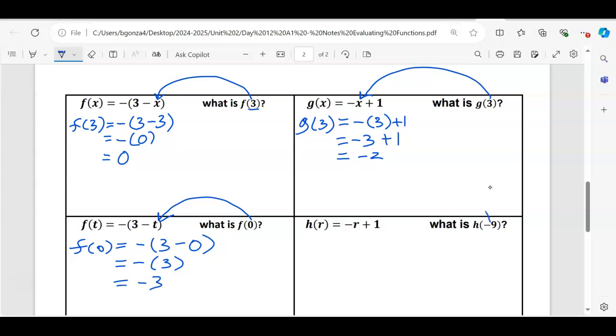Last one, negative 9 is going to replace the R. Now this is kind of weird. H of negative 9 equals negative, and then R is negative 9, plus 1. What is a negative negative? Negative 9? What does a double negative do? So a negative negative is like a plus - makes it positive. They cancel each other out basically. So if you see a negative and then you have another negative, now it's just regular old 9, positive 9 plus 1, is 10.